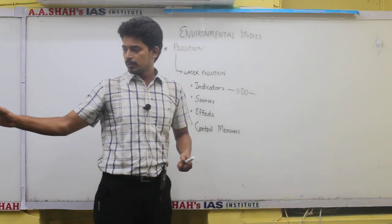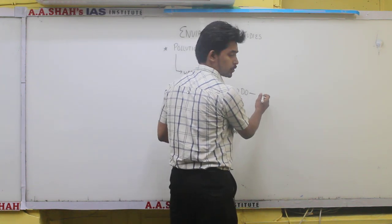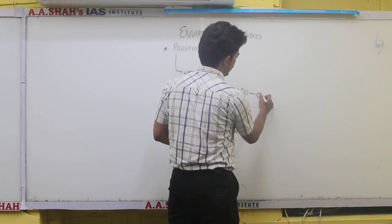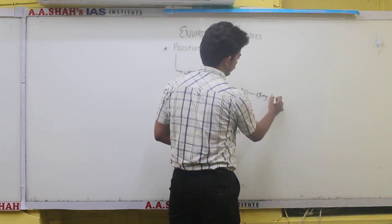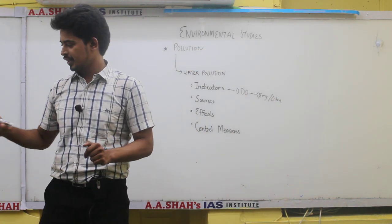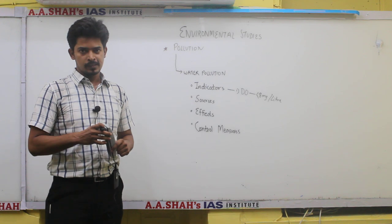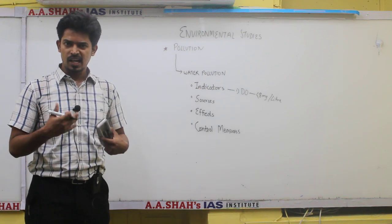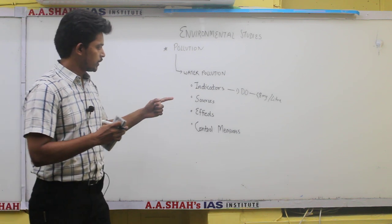The importance is dissolved oxygen and the amount in the water. According to WHO standards, if dissolved oxygen is less than 8 milligrams per liter, the water becomes contaminated. And if it drops below 4 mg per liter, it is highly contaminated.